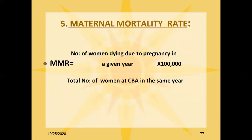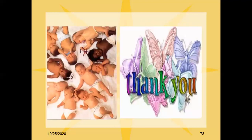The maternal mortality ratio is the number of women dying due to pregnancy in a given year divided by total number of live births in the same year, multiplied by 100,000. The maternal mortality rate is the number of women dying due to pregnancy in a given year divided by total number of women at childbearing age in the same year, multiplied by 100,000.